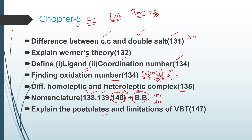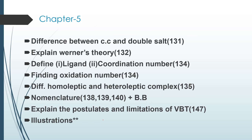Next, explain the postulates and limitations of VBT — valence bond theory. Page 147 is very important. The limitations section is a 2-mark question, and the illustrations can sometimes be a 5-mark question. That's all about chapter 5.